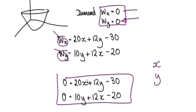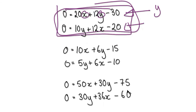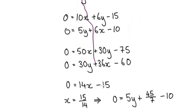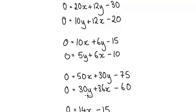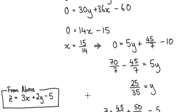We're finding combinations of X and Y such that both equations equal zero simultaneously. Solving the system, it turns out X equals a specific value. Once you know X, you can work backwards to find Y — Y equals a corresponding value.